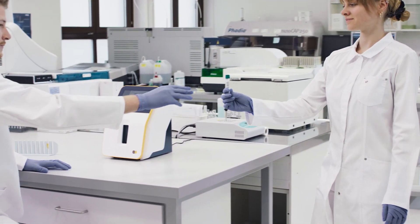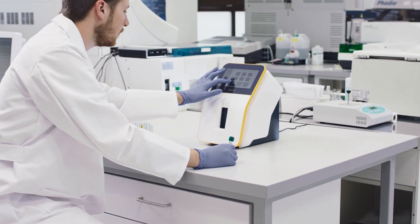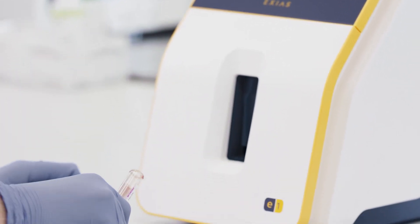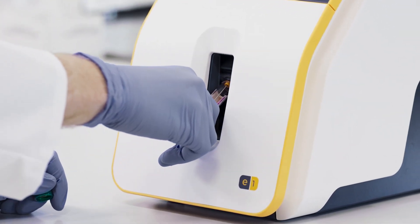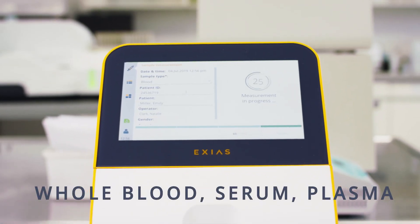The Exius E1 Analyzer makes it possible. An electrolyte system that is intended for in vitro measurements of sodium, potassium, chloride, calcium, as well as pH and hematocrit, measured in blood, serum, and plasma.